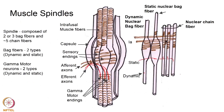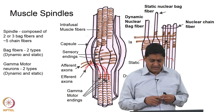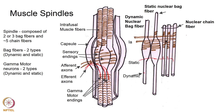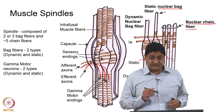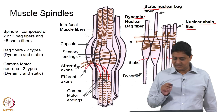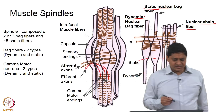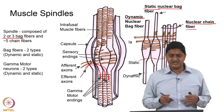When extrafusal fibers change length, the intrafusal fibers also change length because they are located in parallel. There are different types of intrafusal fibers: nuclear bag fibers — those with a bulging in the middle — and nuclear chain fibers, which look like several chains. Nuclear bag fibers are further divided into static and dynamic types. A spindle is usually composed of two or three bag fibers and around five chain fibers.